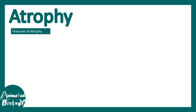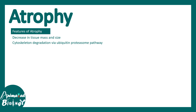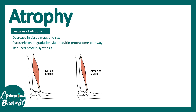Now let's talk about atrophy. There is a popular belief: use it or lose it — and atrophy is just like that. Atrophy means a decrease in tissue mass or size due to less usage. The cytoskeleton degenerates via the ubiquitin-proteasome pathway, there may be changes in autophagy, and there is reduced protein synthesis, leading to thinner, atrophied muscle.